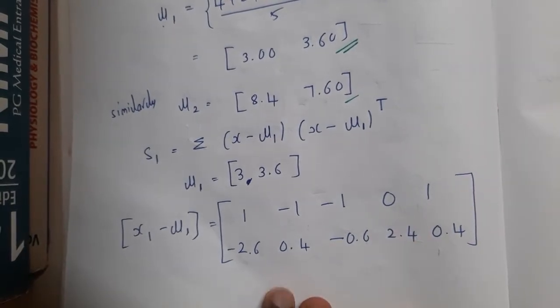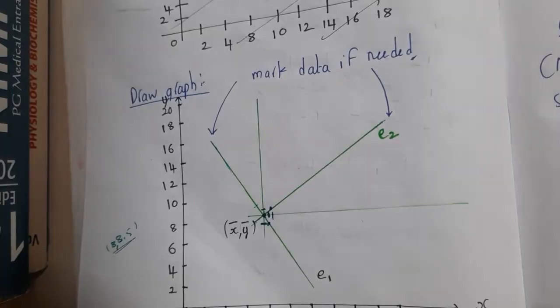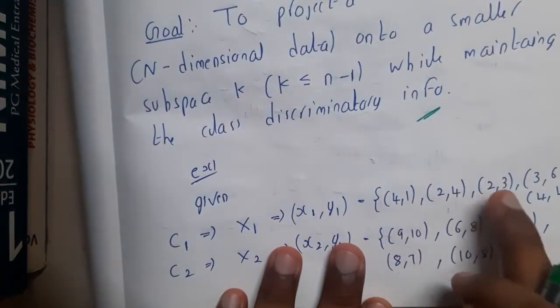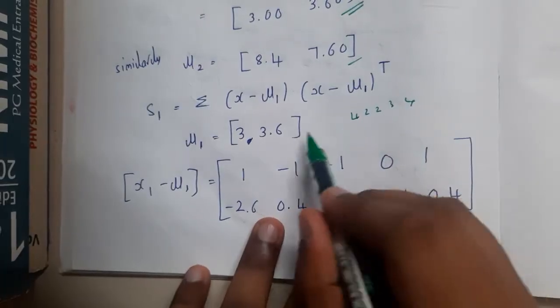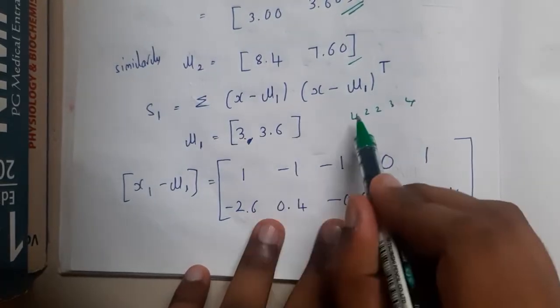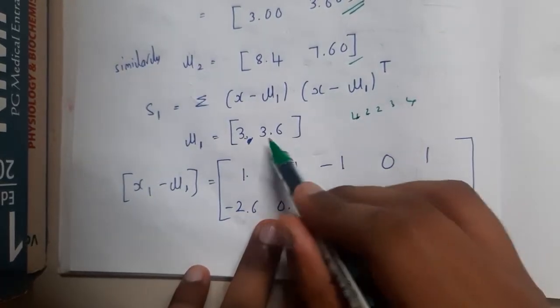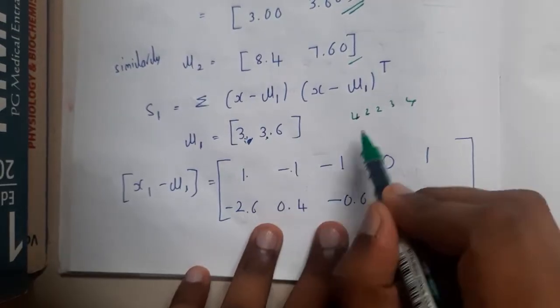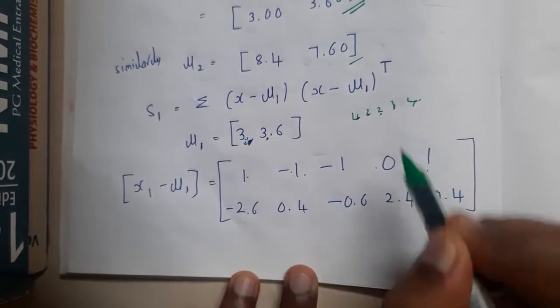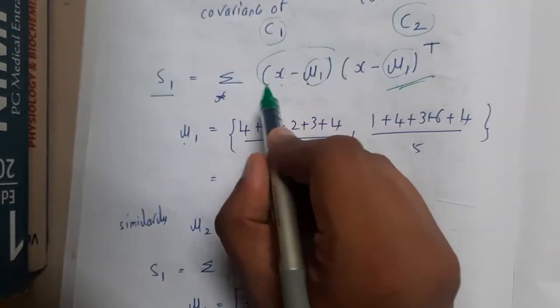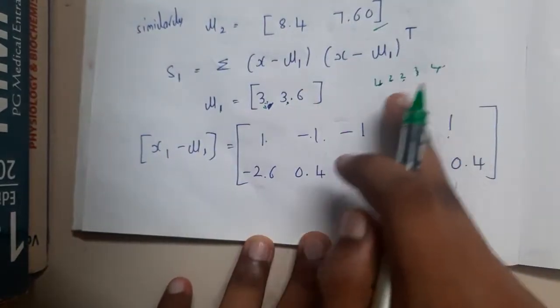Now check the data set. It is 4, 2, 2, 3, 4. Now subtract this with this. So 4 minus 3 is 1, 2 minus 3 is minus 1, 2 minus 3 is minus 1, 3 minus 3 is 0, 4 minus 3 is 1. I just calculated this value. Similarly, you do for the other also.